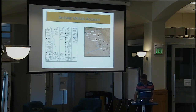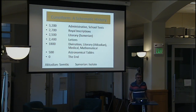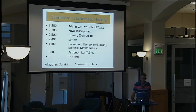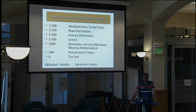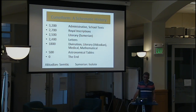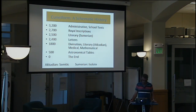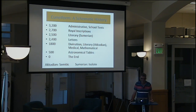Let me take you through a very schematic history of cuneiform writing. It begins primarily with administrative accounts as well as school texts. A few hundred years later we get royal inscriptions — essentially kings bragging about their achievements. Halfway through the third millennium we get the first literary texts in Sumerian, primarily songs. Then we get letters for long-distance communication. In the early second millennium there is an explosion of writing — divination, literary texts now in Akkadian, medical texts, mathematical texts, and all kinds of other things. In the first millennium, astronomical tables are probably the most important genre added to this list.